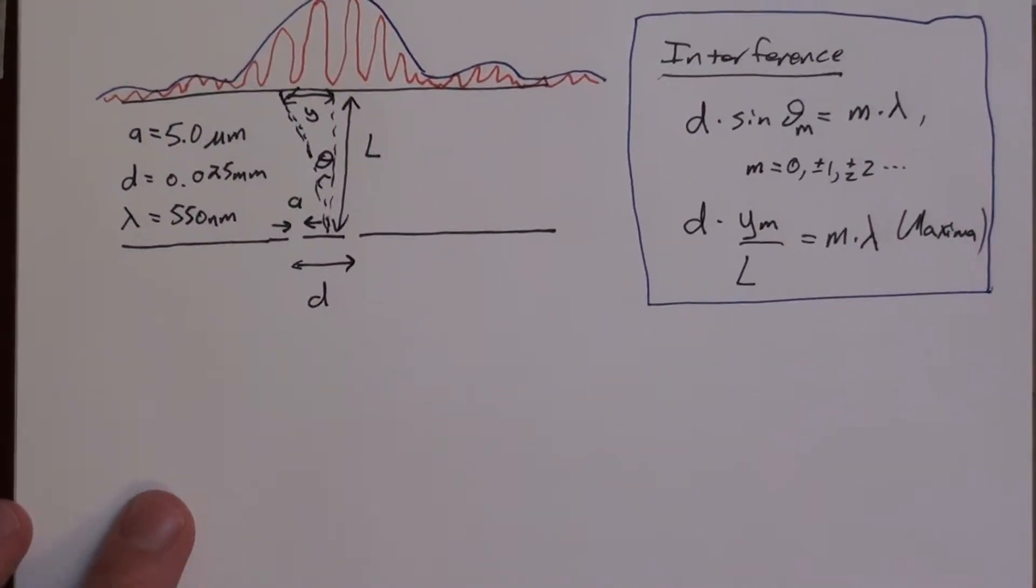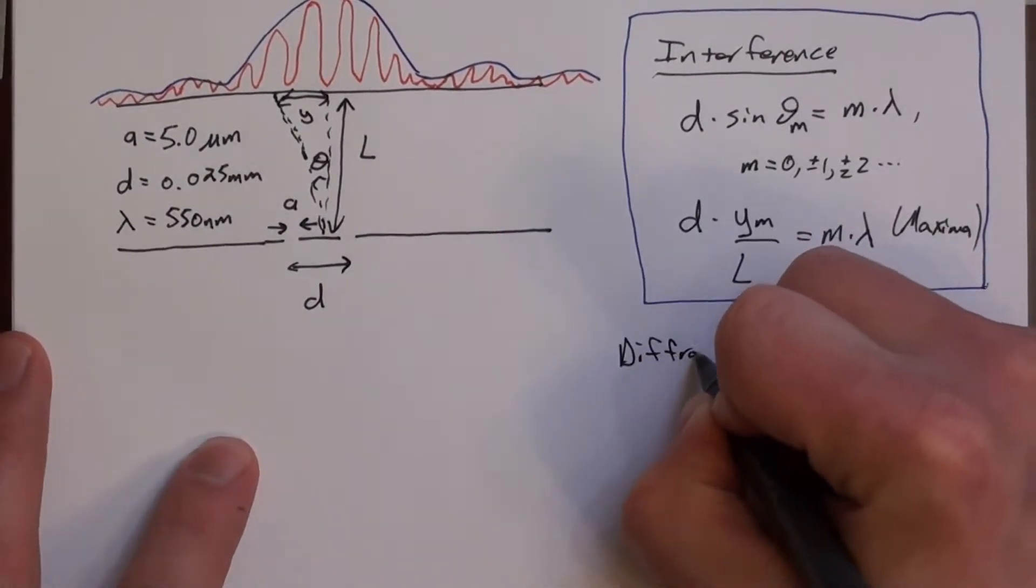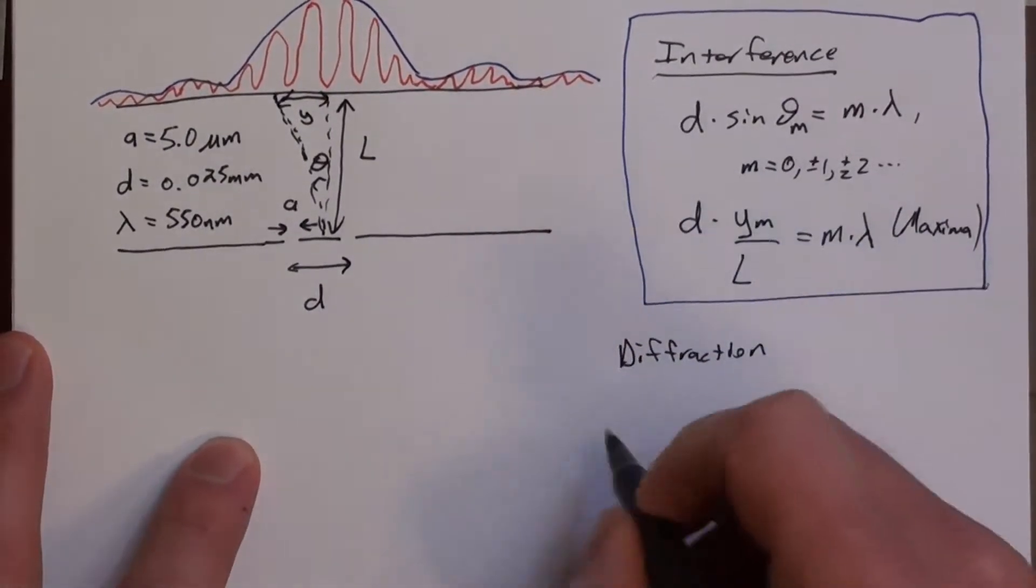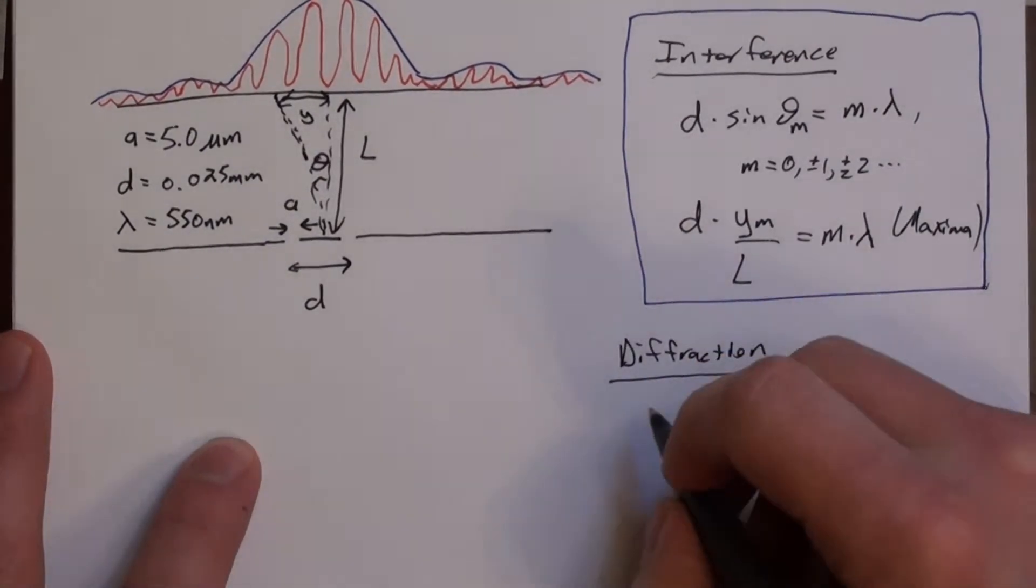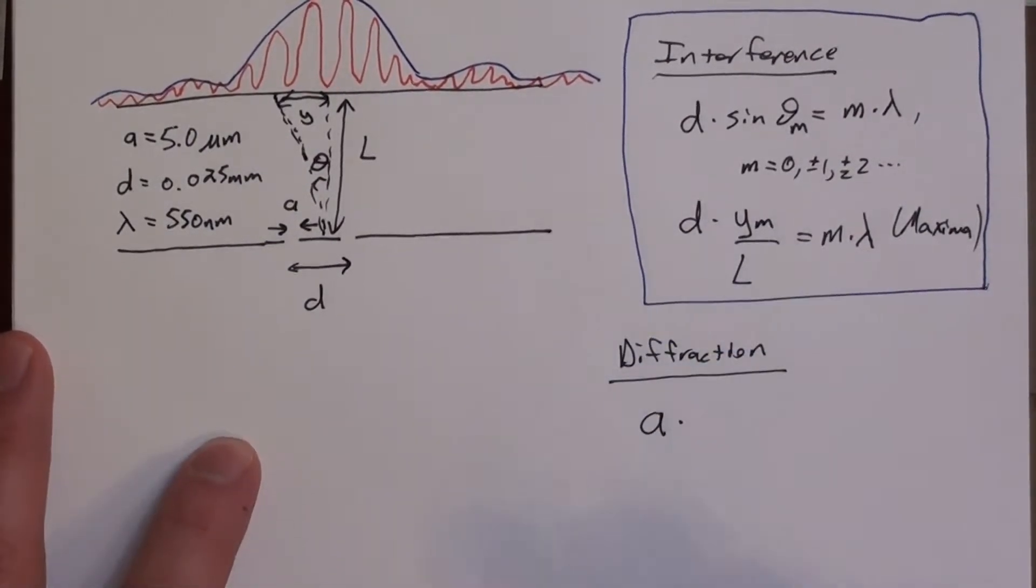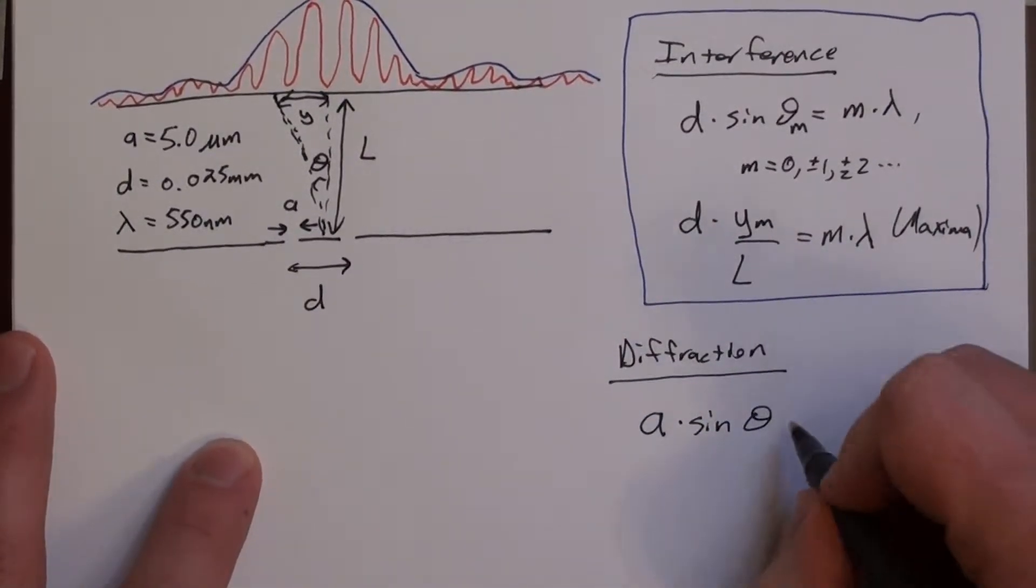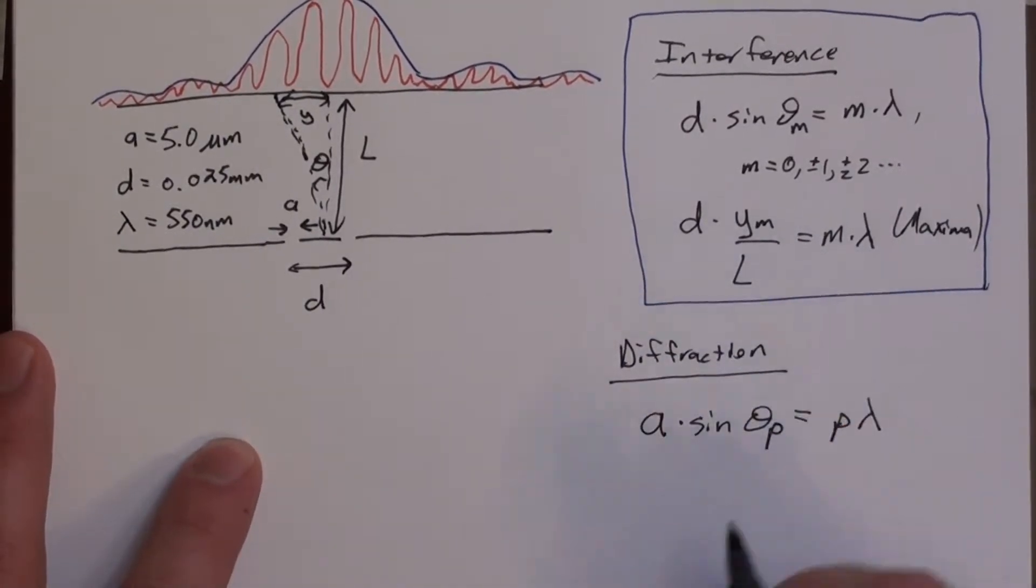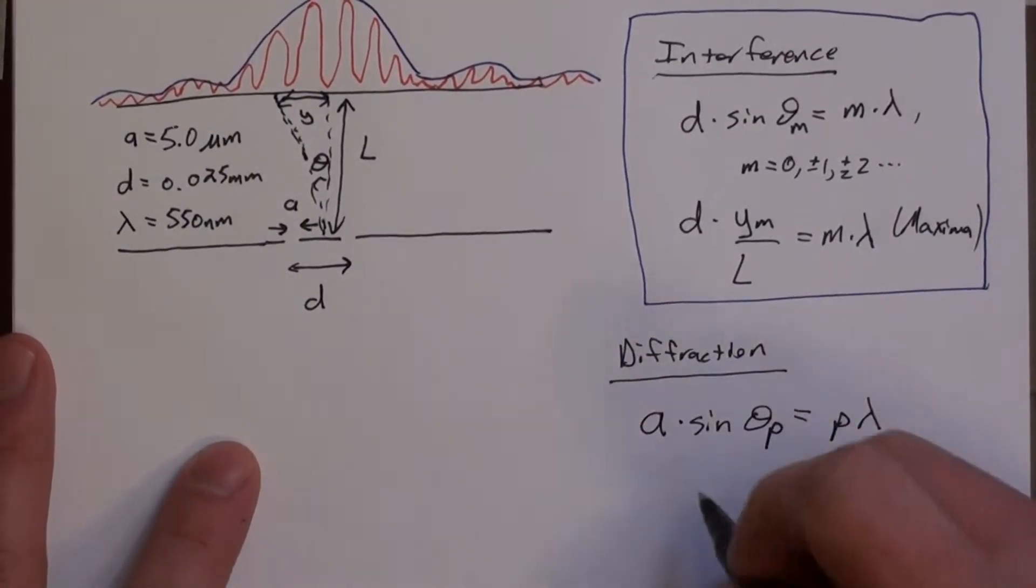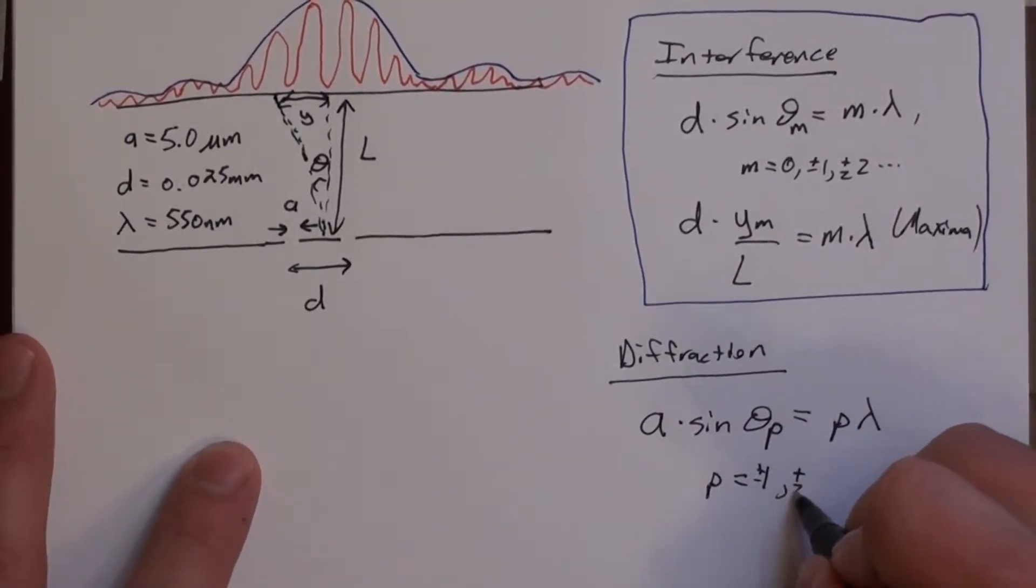So now I should describe the diffraction as well. For diffraction we say A, which is the slit width, times sine theta equals P lambda. So this is sine theta P, where P in this case does not start at 0. It starts at 1. Plus or minus 1, plus or minus 2, and so forth.